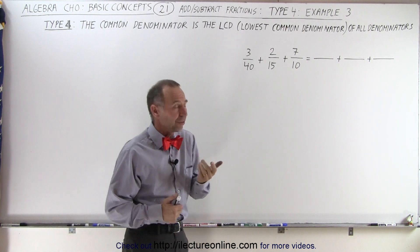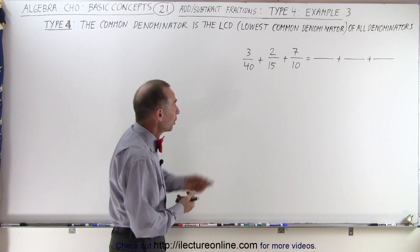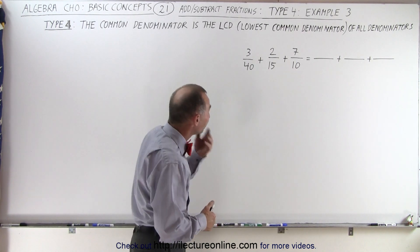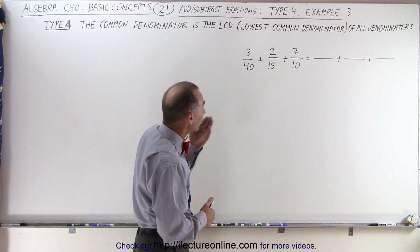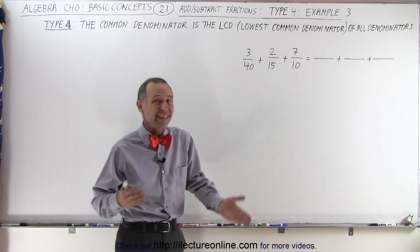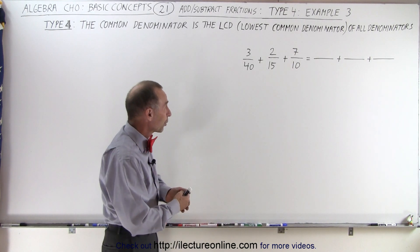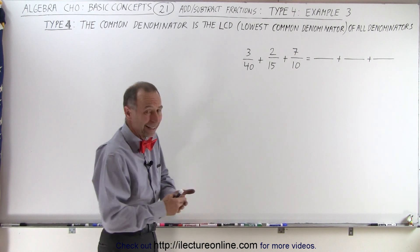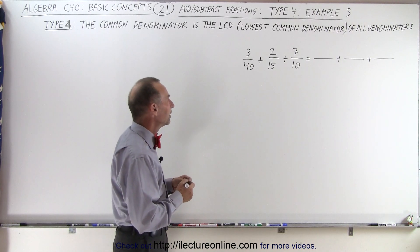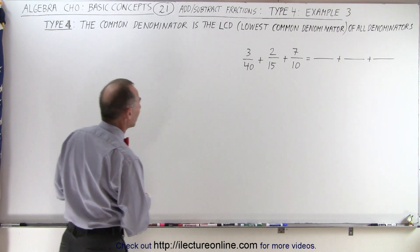Now we're supposed to look for the lowest common denominator. We could multiply them all together, but if we did, the denominator would be 6,000 — and I don't think you want to work with denominators that big. So let's find the lowest common denominator. We have two methods to do so.